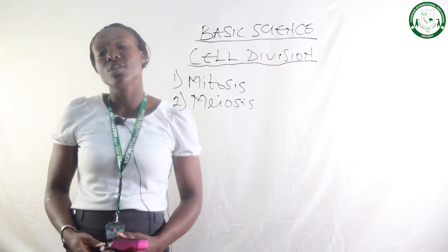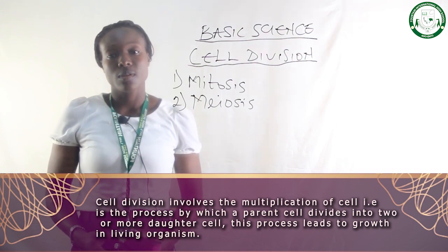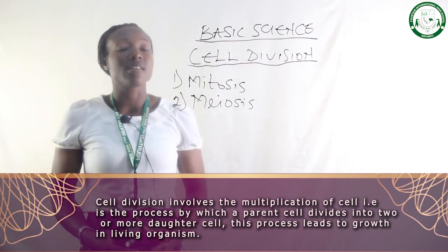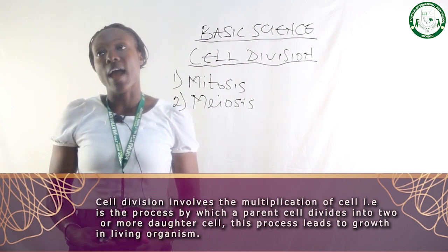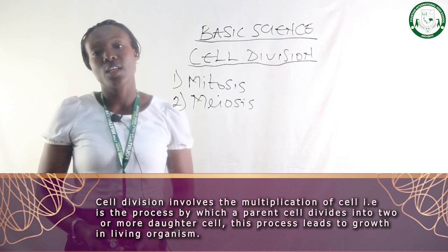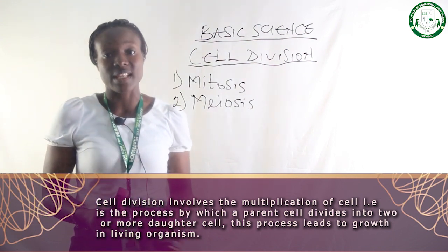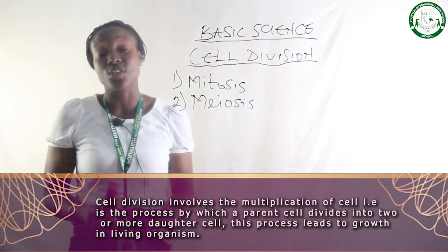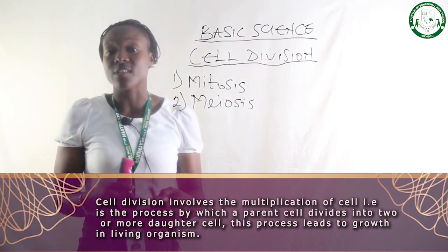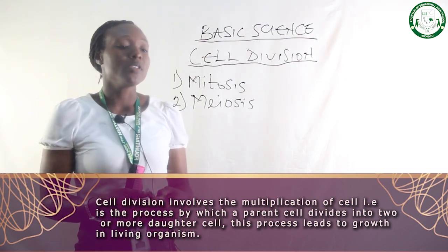Cell division means multiplication of cells. Multiplication of cells in the sense that a single cell has to divide into two, two to four, four to eight. It is a situation whereby a single cell divides into two or more cells, and that is why it is called multiplication of cells.